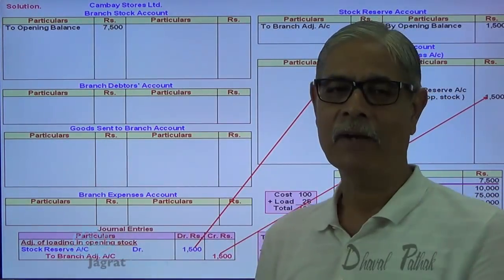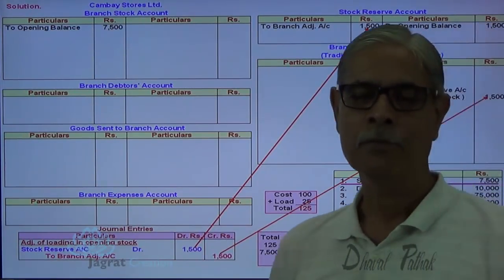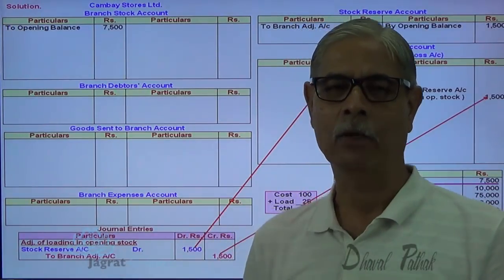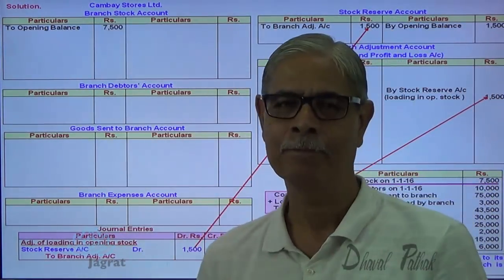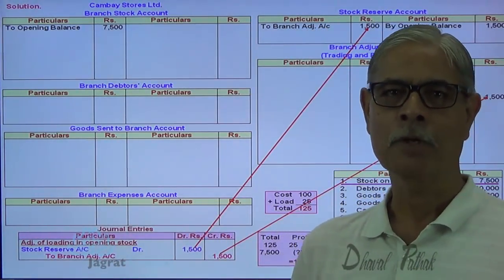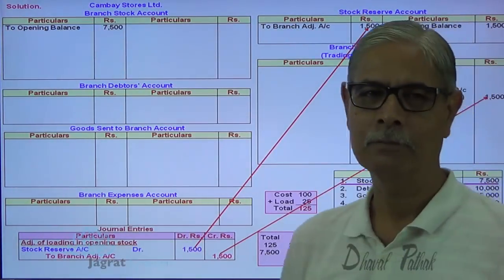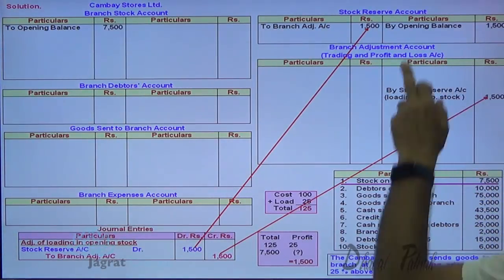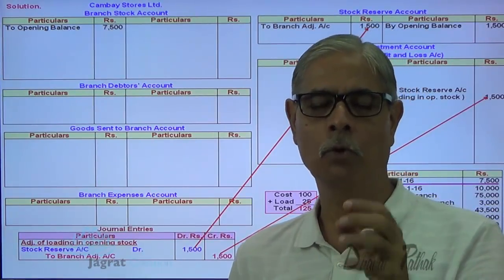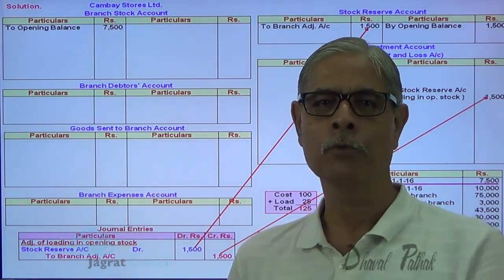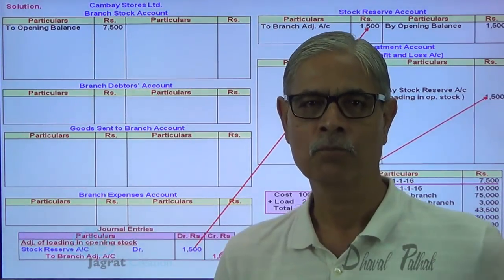Opening stock of 7,500 at invoice price — the profit element of 1,500 is recorded on the credit side of the branch adjustment account. Stock reserve account is a transitory account; its opening balance is transferred to the branch adjustment account at the beginning of the year. The profit element in the opening stock must be found, recorded as opening balance in stock reserve account, and transferred to the adjustment account immediately — all by default, even when not specifically instructed in the sum.